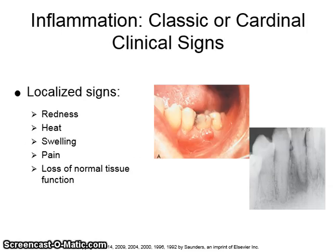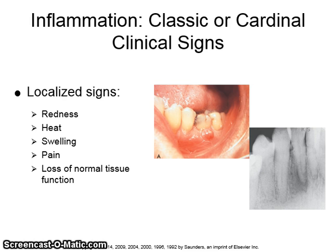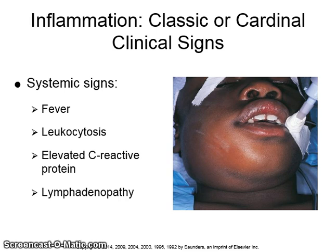Inflammation has certain classic or cardinal clinical signs. Some of the localized signs are redness or erythema, heat, swelling, pain, and loss of normal tissue function. Some of the cardinal systemic signs include fever, leukocytosis, elevated C-reactive protein, and lymphadenopathy.